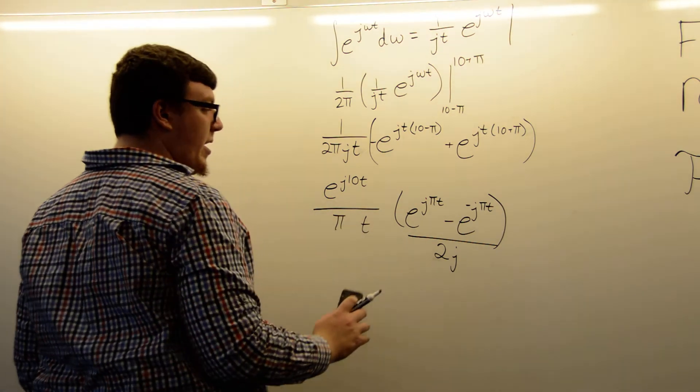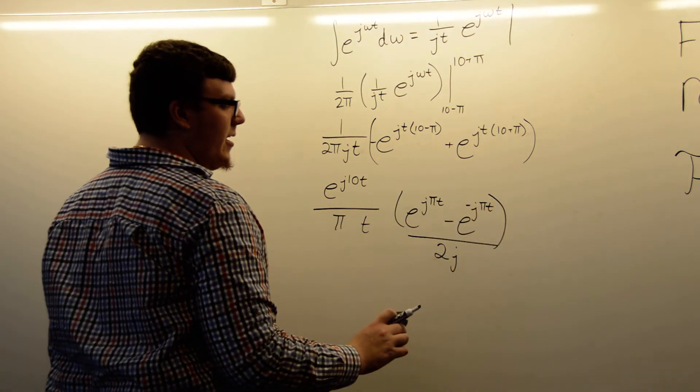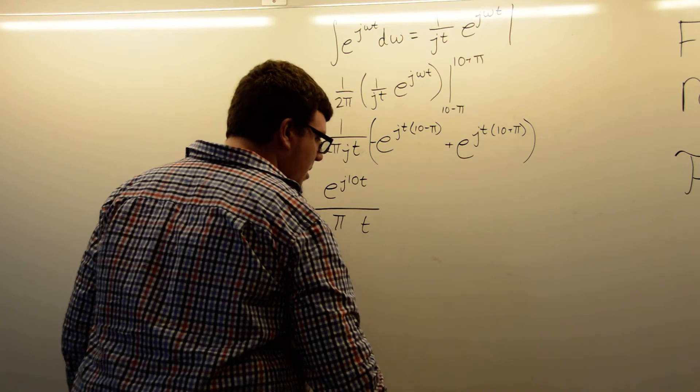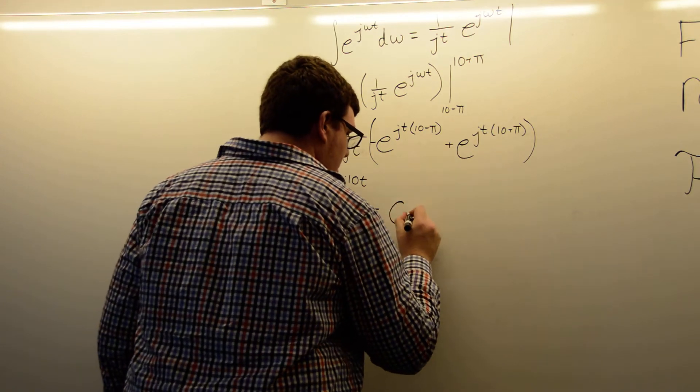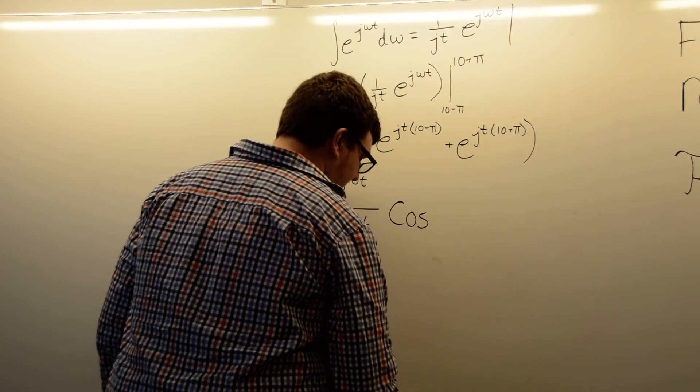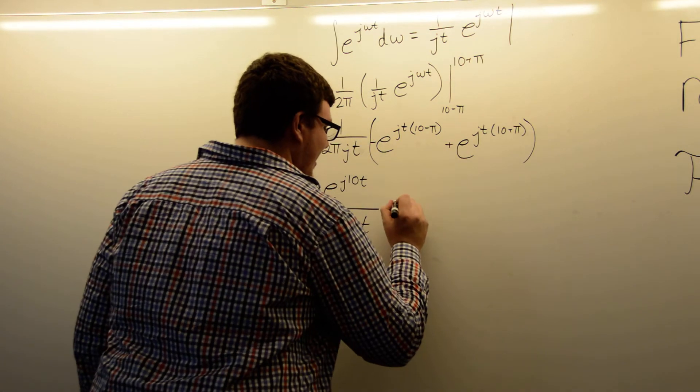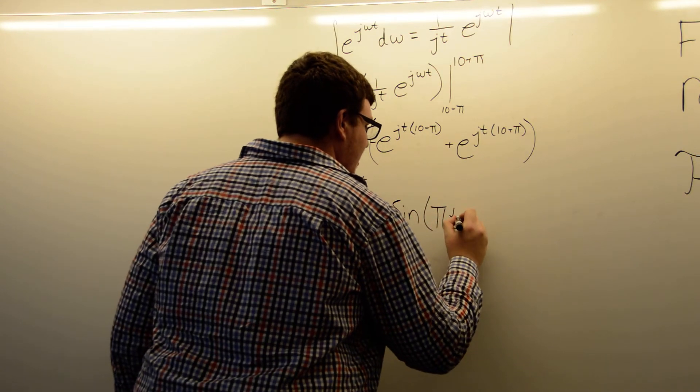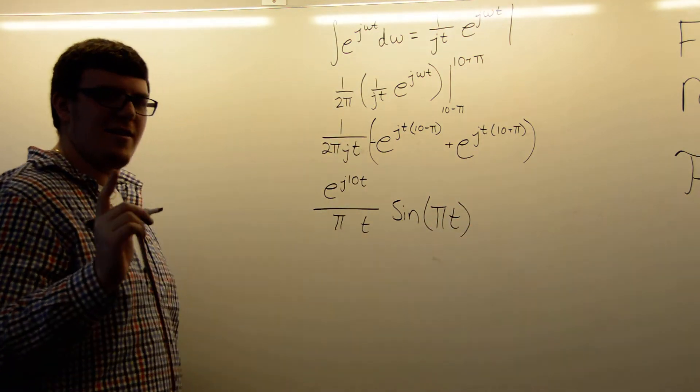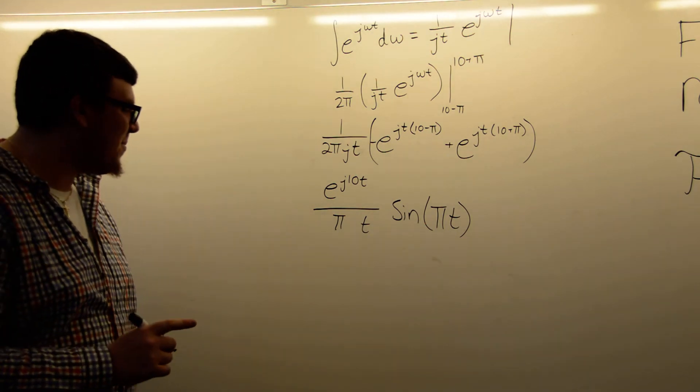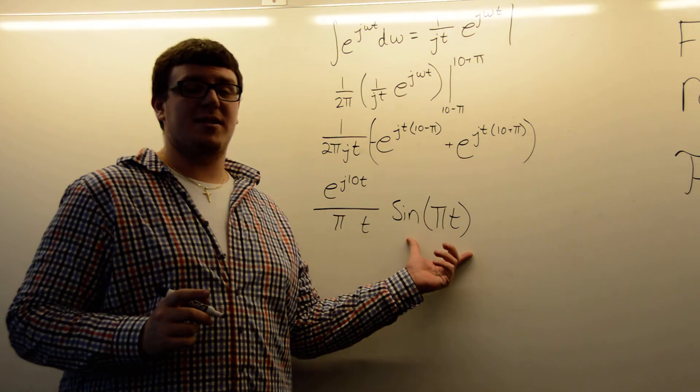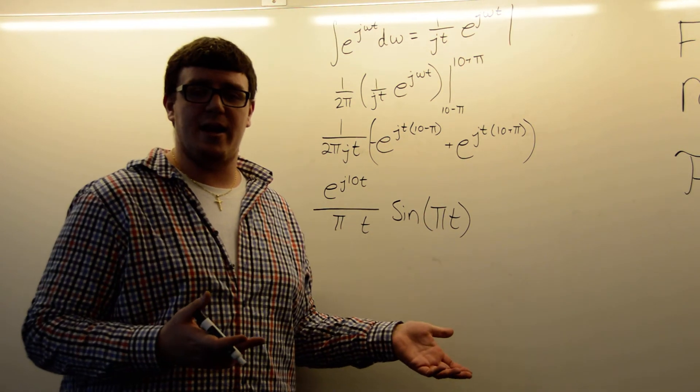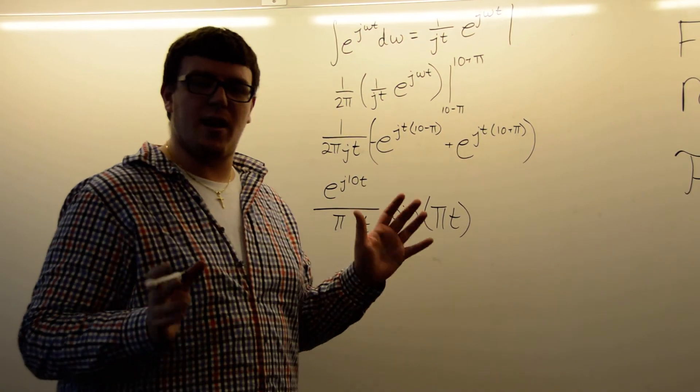So, taking those, we can replace this entire function here with sine πt. It is sine πt. And if you don't understand where that sine came from, review your Euler's identity definitions of sine and cosine. Those are the hyperbolic definitions.